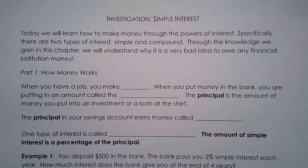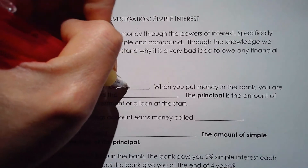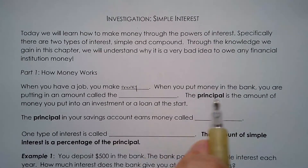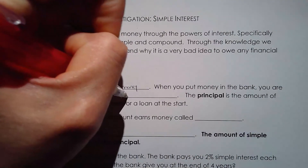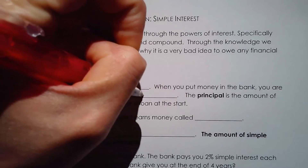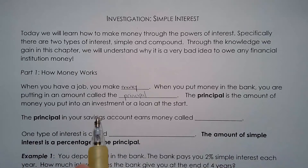This is our first lesson, which is on simple interest. When you have a job, you make money. When you put the money in the bank, you are putting in an amount called the principal. Not every bank account will give you money, but let's say this is a savings account and it does give you some money. The principal is the amount of money you put into an investment or a loan at the start.